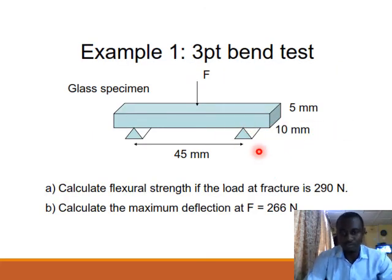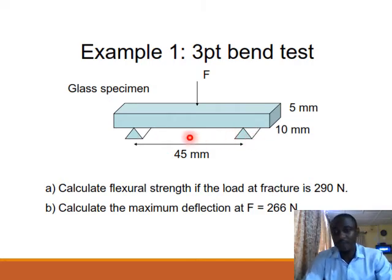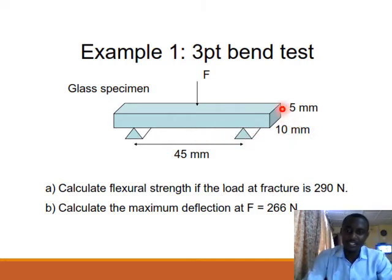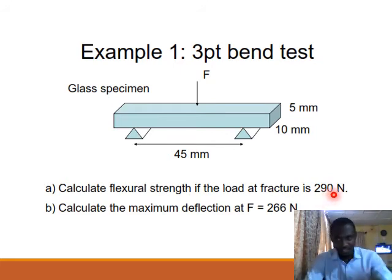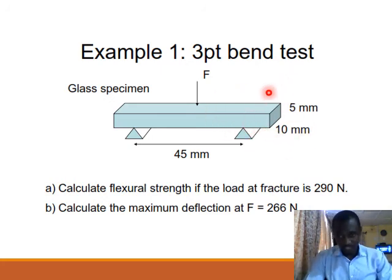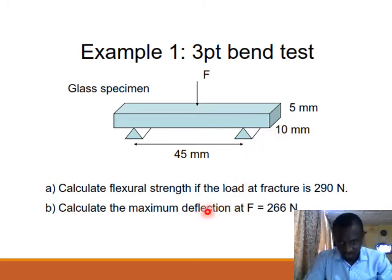As an exercise: consider a specimen with a loading span of 45 mm, depth of 15 mm, and width of 10 mm. If the load at fracture is 290 N, apply the rectangular flexural strength formula to calculate the flexural strength, and then also calculate the deflection. Try this as a practice problem.